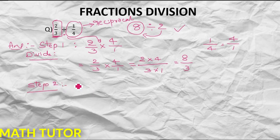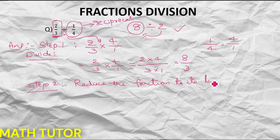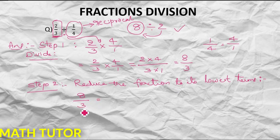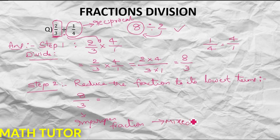There is one more step. You have to reduce the fraction to its lowest terms. You find the common factors and simplify — that is reducing the fraction. For 8 by 3, it is already in its lowest terms. Now, 8 by 3 is an improper fraction, so you have to convert it into a mixed fraction.